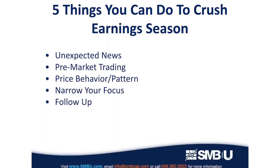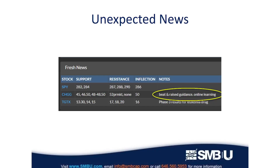For short-term traders, earnings season is our Super Bowl — it happens four times per year. Here are five things you can do to crush it during earnings season. Number one is unexpected news. Companies release earnings per share, revenues, margins, and so on. What we're looking for is earnings that are much better or much worse than expected, combined with raised or lowered guidance — that's unexpected and can create unusually large moves.